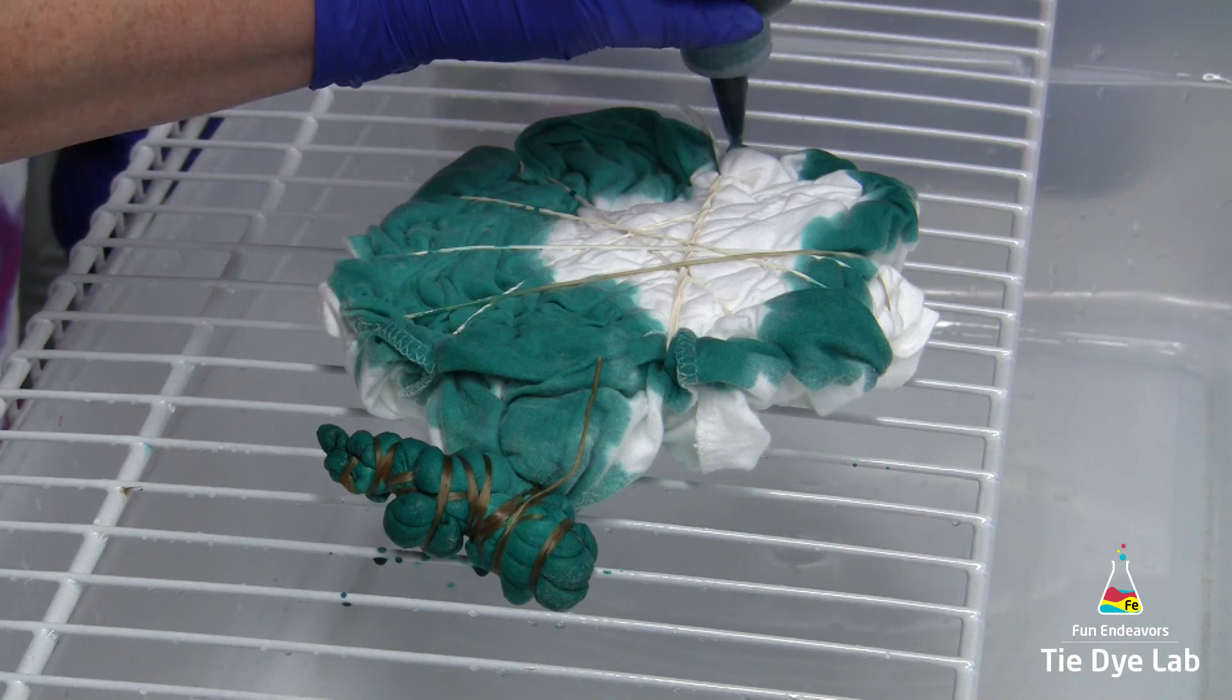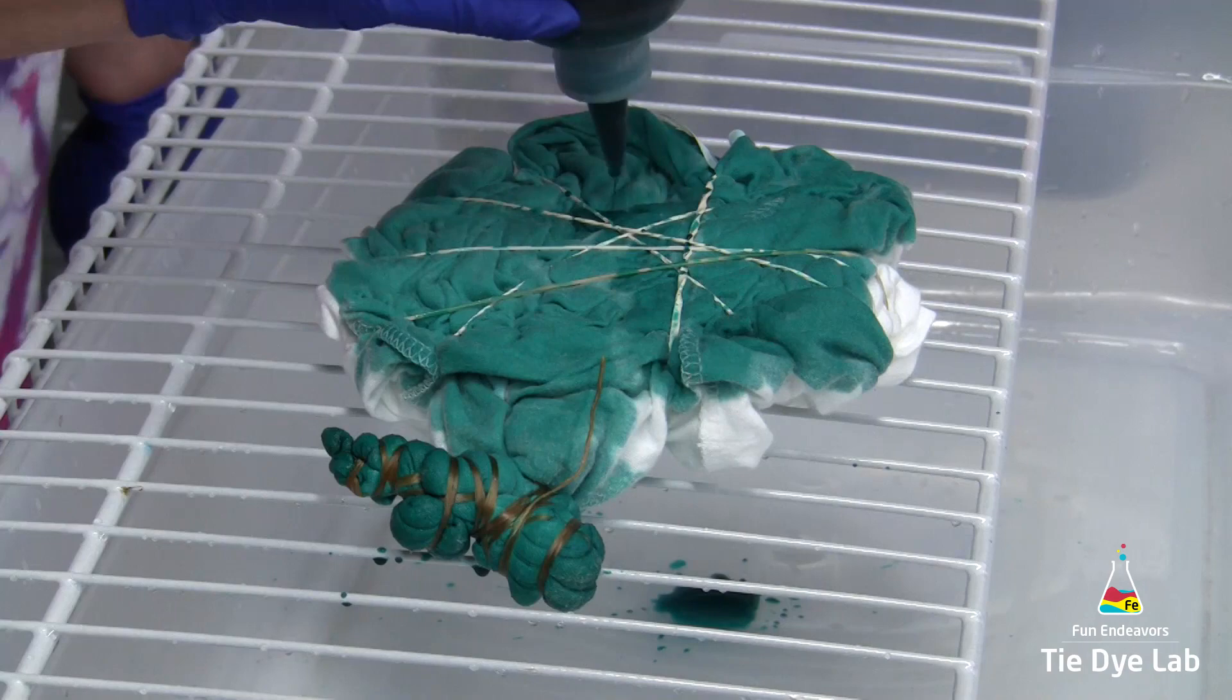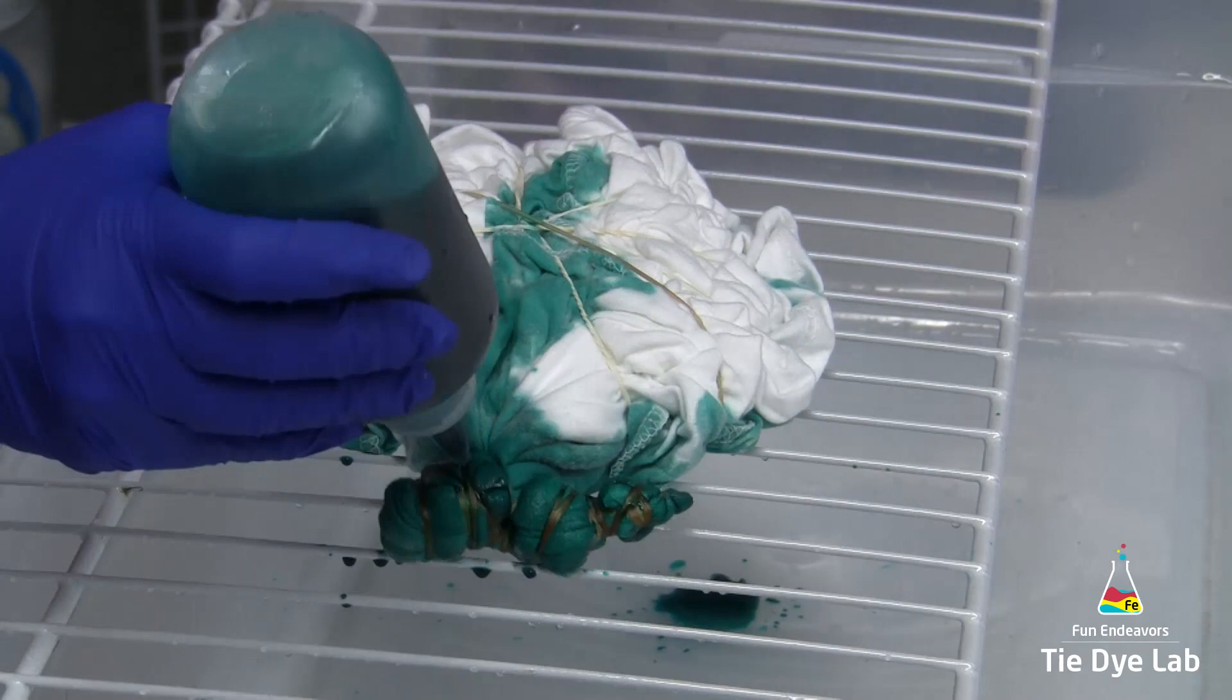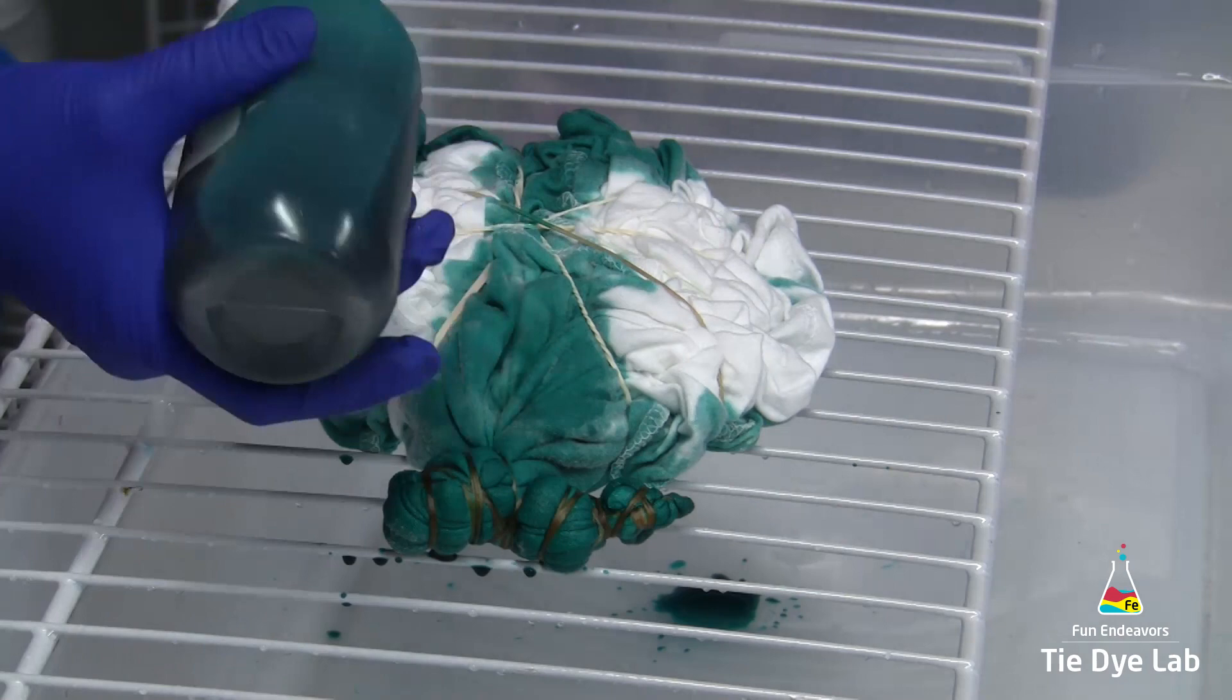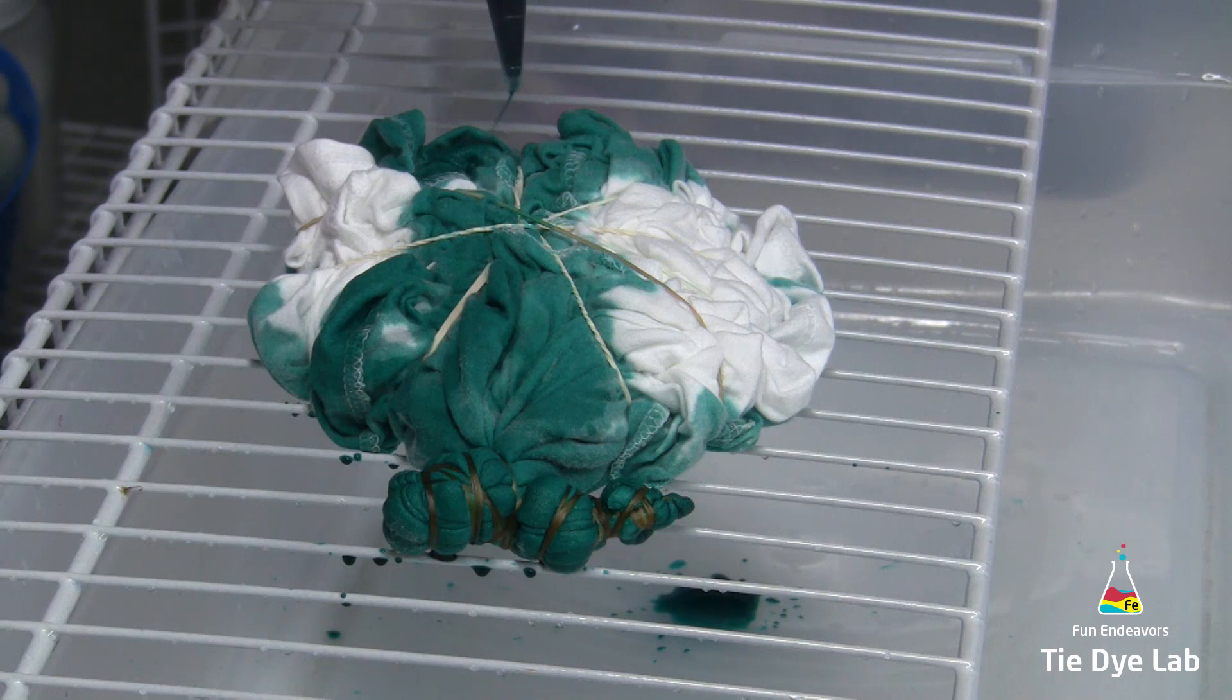I'm going to end up using this entire cup of dye on this shirt. The shirt is a size large, but I'm really going to make sure I get it well saturated. I'm not as concerned about the portion that I scrunched. If part of the white is showing on that, I don't mind that at all, but I want to make sure I get the mandala well saturated.